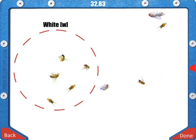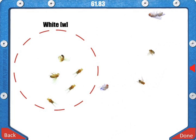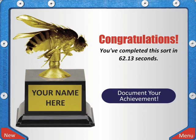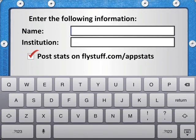If you believe you have completed a successful sort, click the Done button in the lower right corner of the flypad. After you have corrected any mistakes, you can complete the sort again by tapping the Done button. Your successful sort will afford you the coveted golden fly award. Click to document your achievement and personalize your trophy. Your trophy is automatically saved to your gallery.